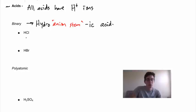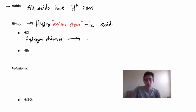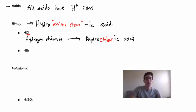Let's start with HCl. If this were not an acid, it would just be hydrogen chloride from ionic compound naming. But because it's an acid, we change the naming: hydro + the anion is chlorine, so the stem becomes 'chlor' + the -ic suffix = hydrochloric acid.